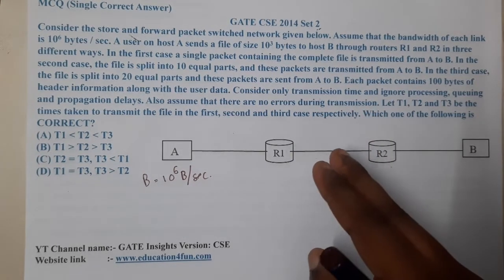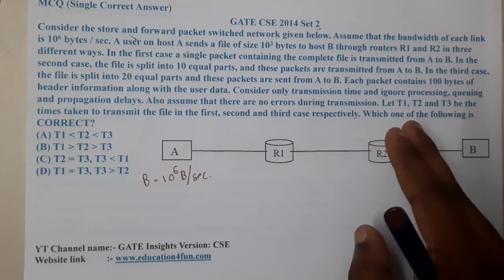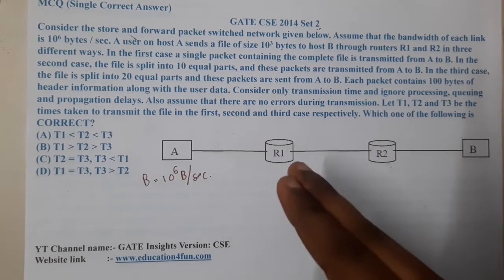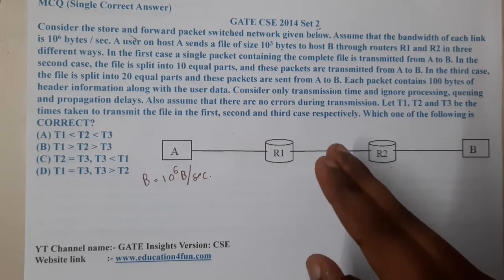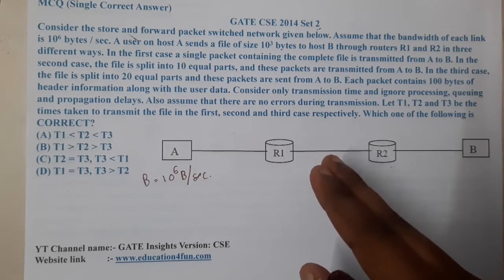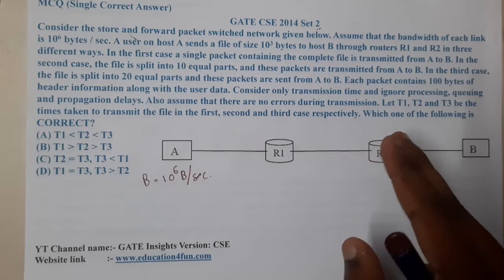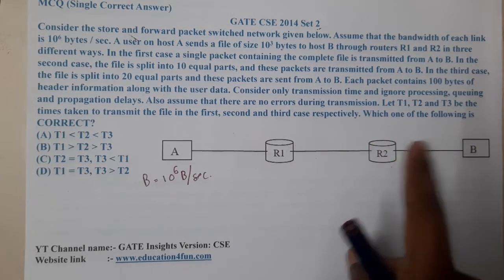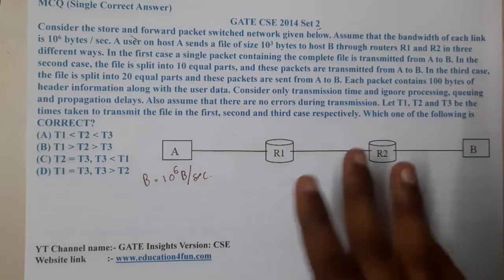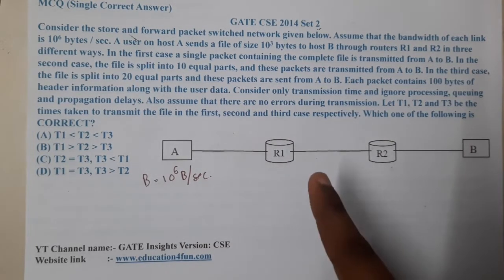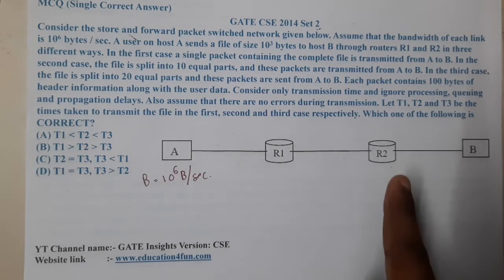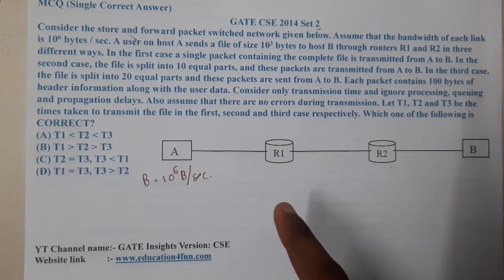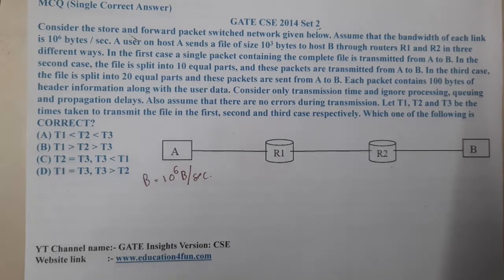Each packet contains 100 bytes of header information along with the user data. Consider only transmission time and ignore propagation delay, queuing, and everything else. Also assume that there is no error during transmission. Let T1, T2, T3 be the times corresponding to each case. We need to find which relation is true.